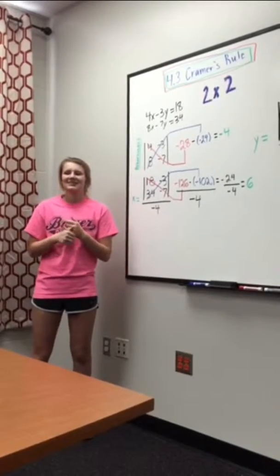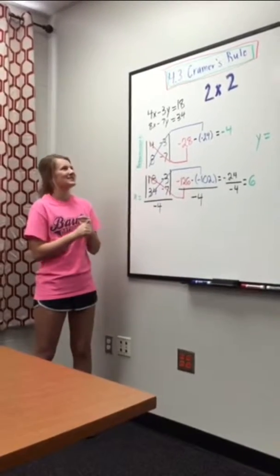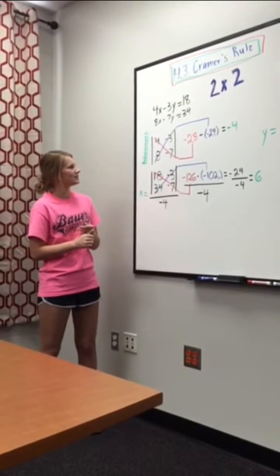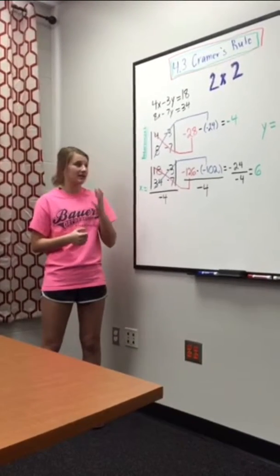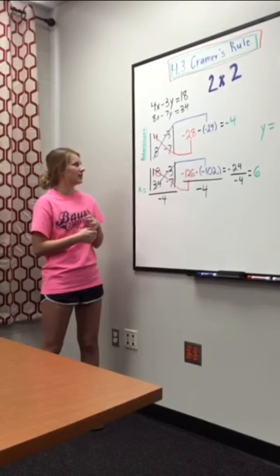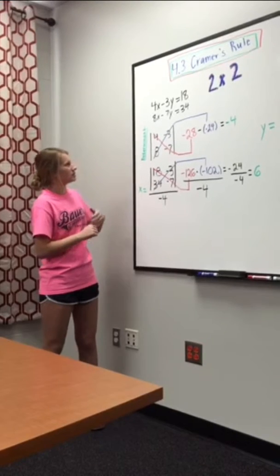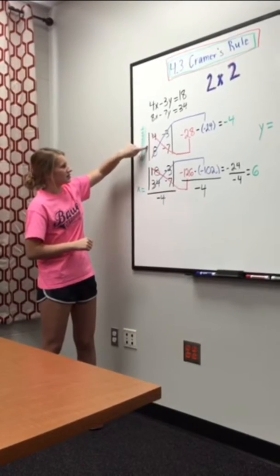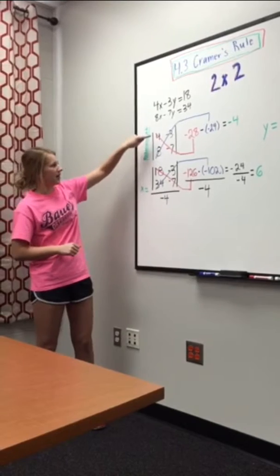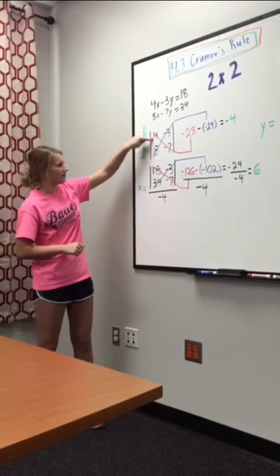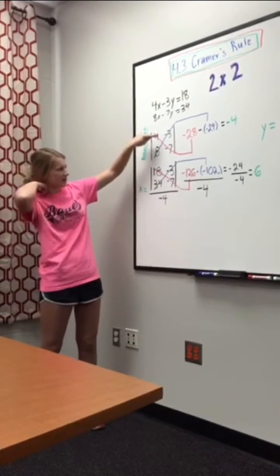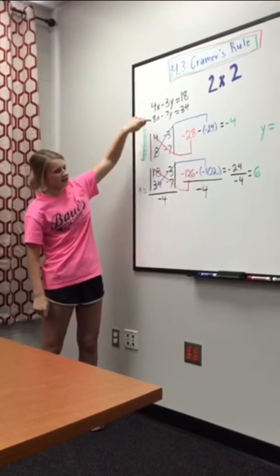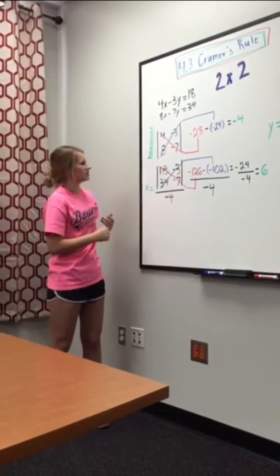Today we're solving a system of equations using Cramer's rule. First you need to start off by finding the determinant, and to do that you place what your x's would be in the coefficient matrix. On the left-hand side you'll have 4 and 8, and on the right-hand side you'll have negative 3 and negative 7, corresponding to what the x's and y's are in the equations.